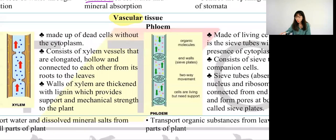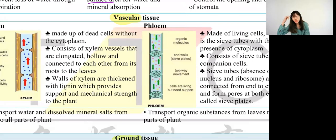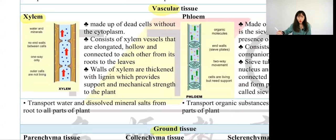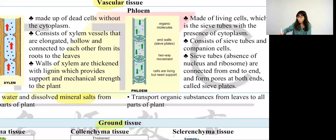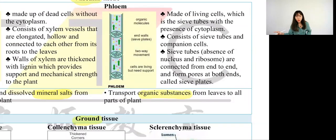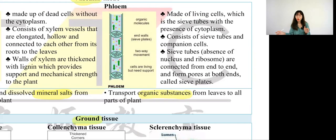Next we have vascular tissue. Vascular is related to xylem and phloem. Xylem transports water and mineral ions from the roots to all parts of the plant — root because root absorbs water. Phloem transports organic substances. We cannot write 'food' — we have to write organic substances, because phloem transports amino acids, sucrose, hormones, and enzymes. If you only write 'food' your answer is not specific enough. Write 'organic substances,' 'sucrose,' or 'photosynthetic products' — do not write 'food.'